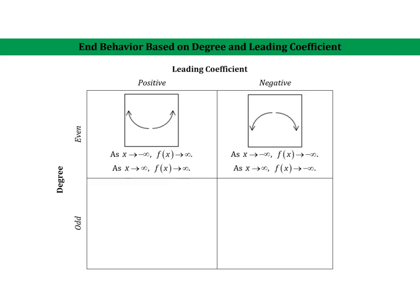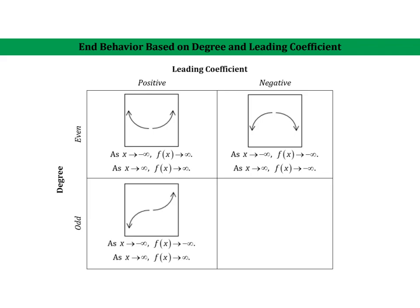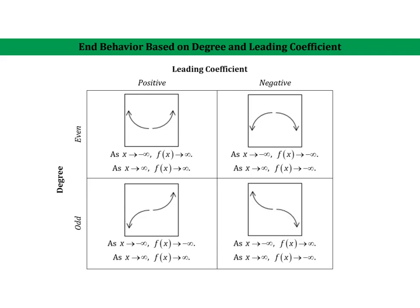For an odd degree with a positive leading coefficient, that would look like y equals x cubed or x to the fifth on the ends. If we throw in a negative coefficient — y equals negative x cubed — it would reflect it. Notice there is a break in the middle, because end behavior is just that: it's what's happening at the ends, not in the middle. A lot of stuff can happen in the middle.